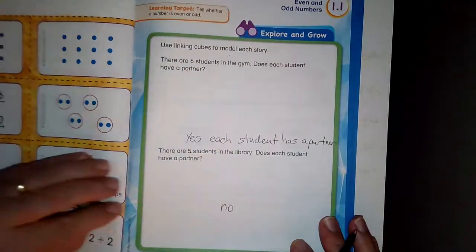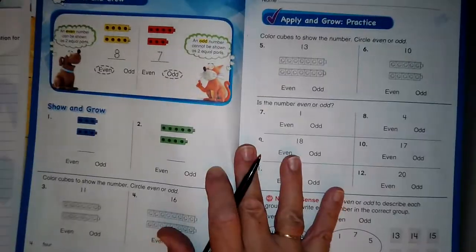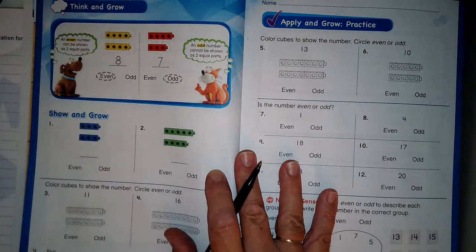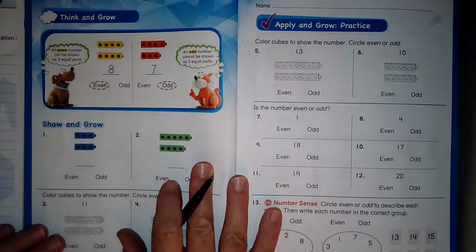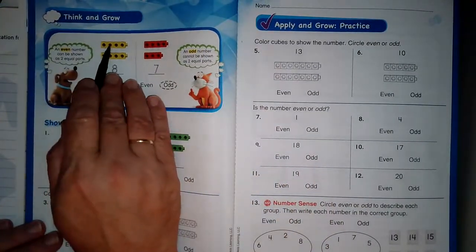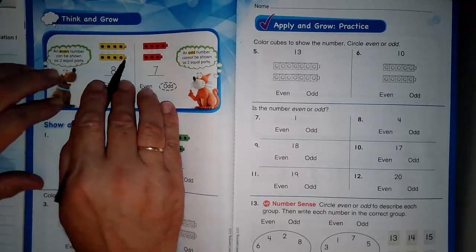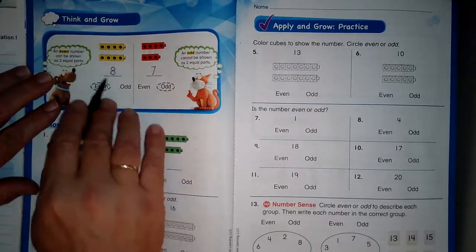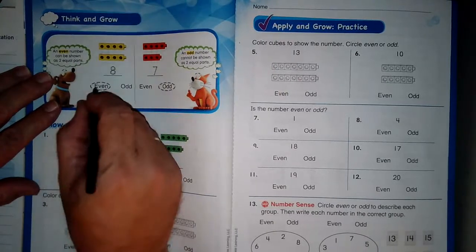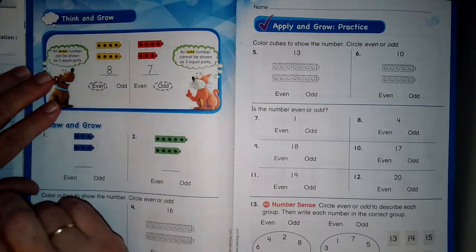So, let me take these and we'll turn the page to this. It says an even number can be shown in two equal parts. I have one, two, three, four in this top group. And I have one, two, three, four in the bottom group. So eight total can be shown as two equal groups.